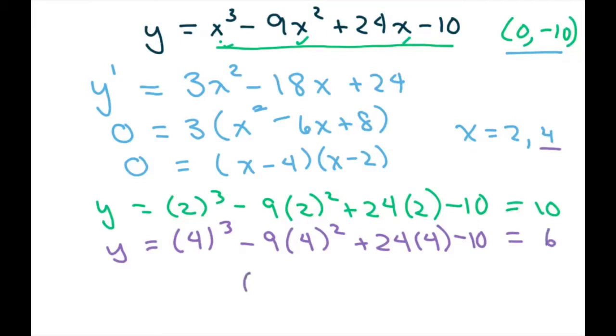So we have critical points at (2, 10) and (4, 6). Keep those written down because we're going to use those to graph.